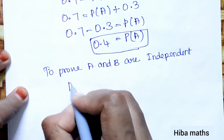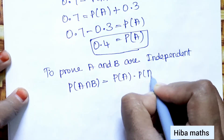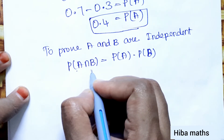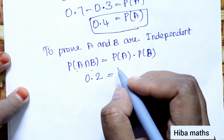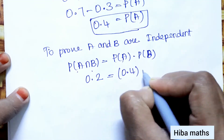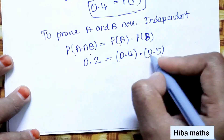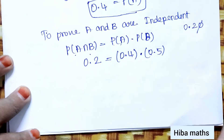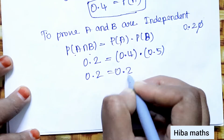To prove A and B are independent, we check P(A∩B) = P(A) × P(B). P(A) × P(B) = 0.4 × 0.5 = 0.2. Since P(A∩B) = 0.2, both sides are equal: 0.2 = 0.2.